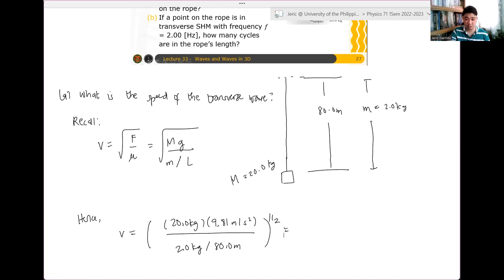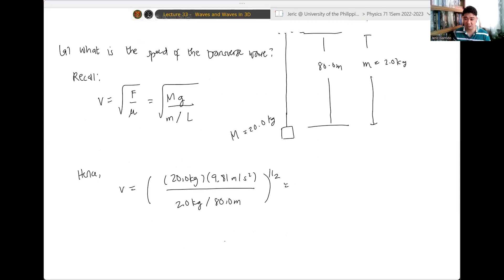The raise to 1.1. And from there, one can show that the total speed of the wave that is traversing that rope is 88.6 meters per second. Medyo mabilis siya. So, ganun lang. It's just application lang ng square root of F over mu. That's letter A.